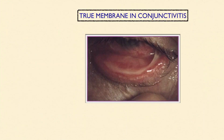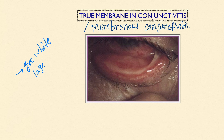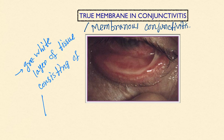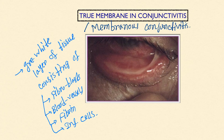Next is the formation of true membrane in conjunctivitis, also called membranous conjunctivitis. This is characterized by the formation of a gray-white layer of tissue consisting of fibroblasts, blood vessels, membranous fibrin, and inflammatory cells. You can see the gray-white colored tissue formed here.